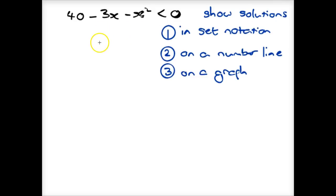Hi, we're looking to solve this quadratic inequality: 40 - 3x - x² is less than 0. And we're looking to show it in three different ways: set notation, on a number line, and on a graph.